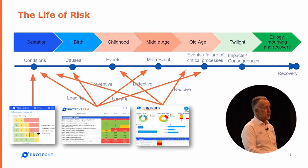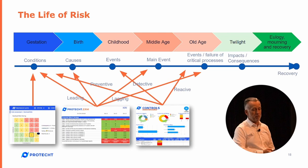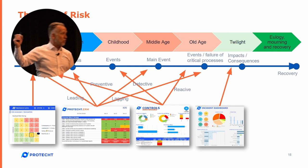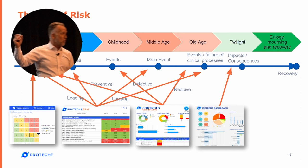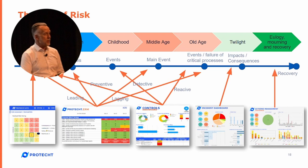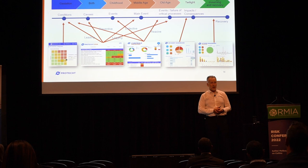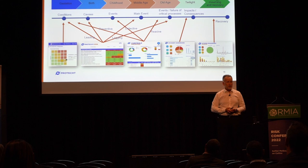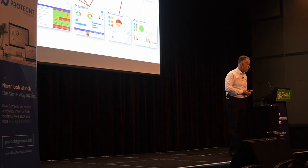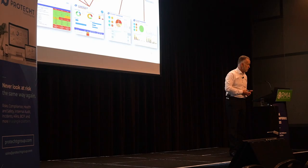Incident management, by definition, means you've gone through the main event and you're feeling pain — so that's more down the right-hand side. Issues and actions management is more around the eulogy — looking at the life and going, what can we learn from those mistakes? A lot of the risk reporting we see at the moment isn't good for either assurance or decision-making, because it is historical, very infrequent, and not integrated.